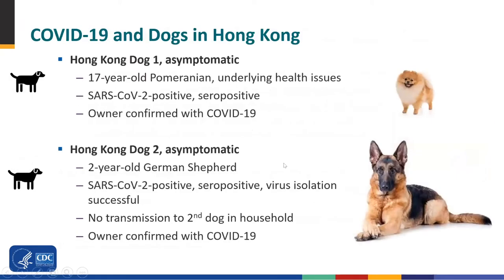Here's information about the dogs in Hong Kong — these happened a little earlier than the US cases, as shown on the timeline. One was a 17-year-old Pomeranian and the other a two-year-old German Shepherd. Both of their owners were confirmed with COVID-19.